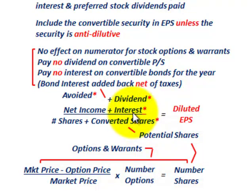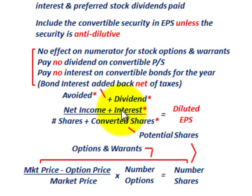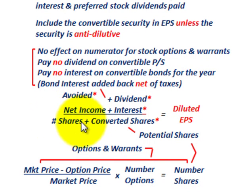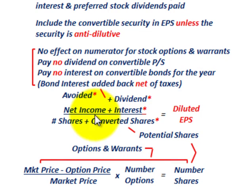For diluted earnings per share, we have net income, then some dividend and interest effects that will affect our net income in the numerator. We then divide by the average number of shares of common stock outstanding plus any converted or potential shares that could be converted — that's our denominator.